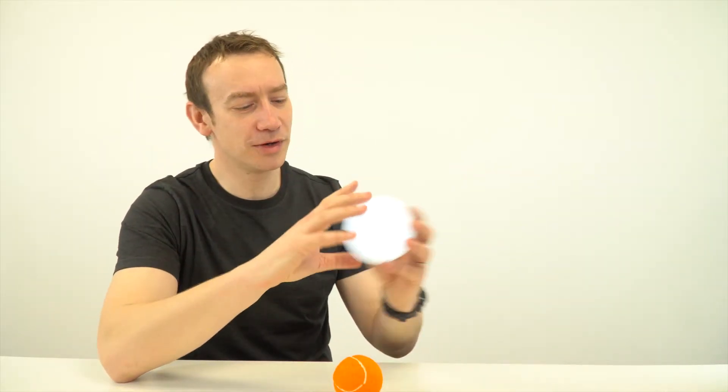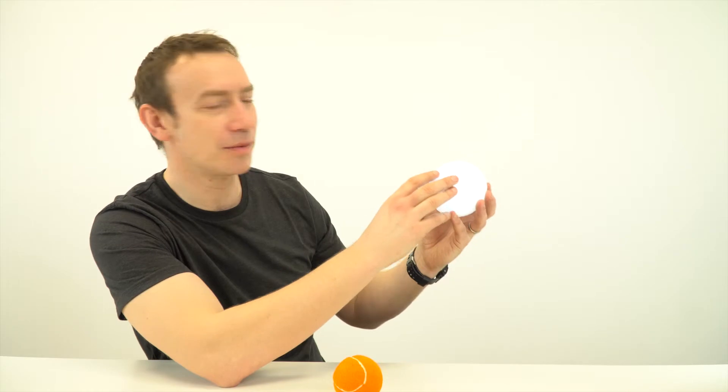But if you wanted to change that, the only way we could do that is maybe go somewhere else. For example, the Moon has a much smaller mass than the Earth, and therefore the gravitational field strength is going to be a lot smaller. It's about 1.6 newtons per kilogram on the Moon.